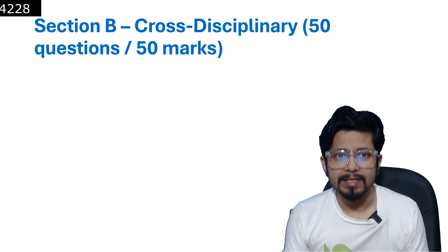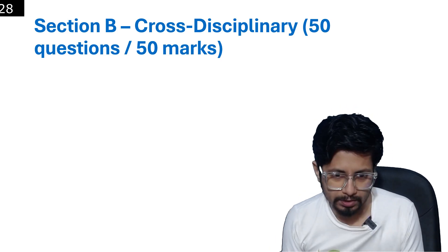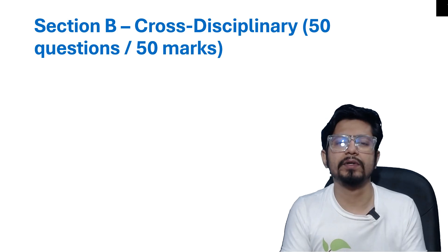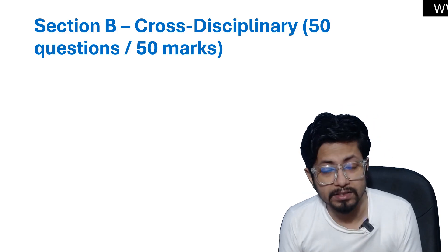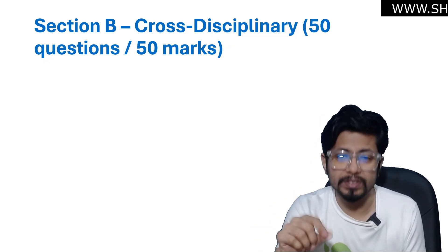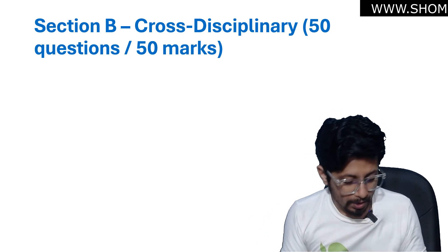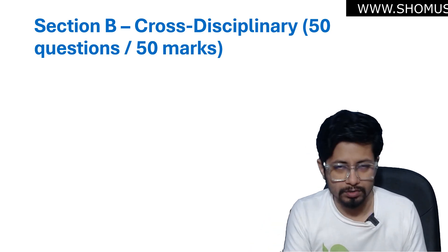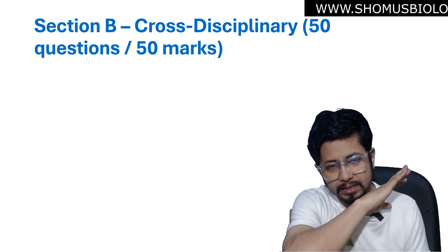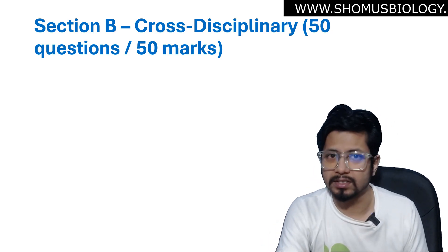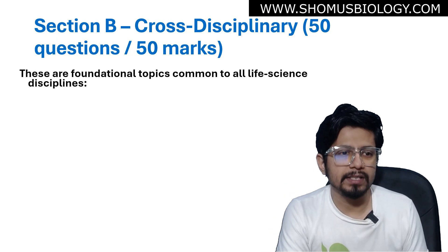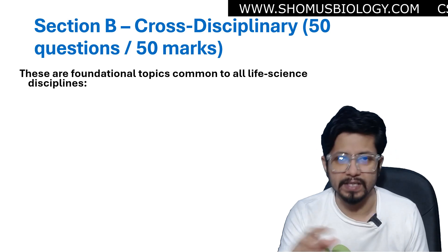Next is Section B. Section B and C both comprise subjective questions. Section B is compulsory subjective questions from all disciplines of life sciences, while Section C is specialized — you get to choose which subject you want to attend in Section C. Section B is compulsory with cross-disciplinary questions from all disciplines; you cannot choose your subject in Section B. It is 50 questions, one mark each, total 50 marks, covering fundamental topics common to all life science disciplines.